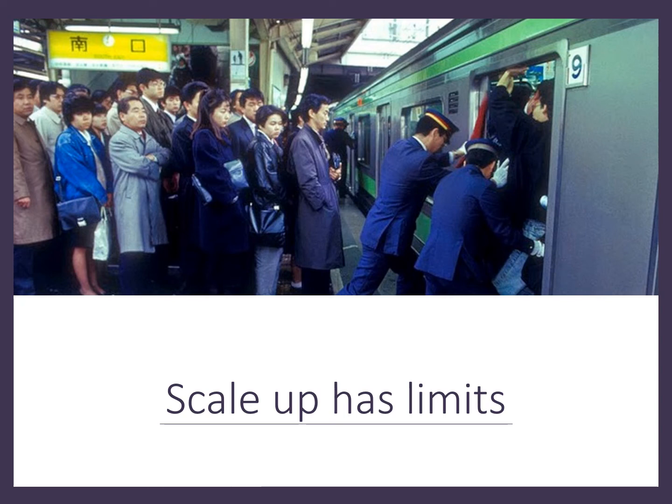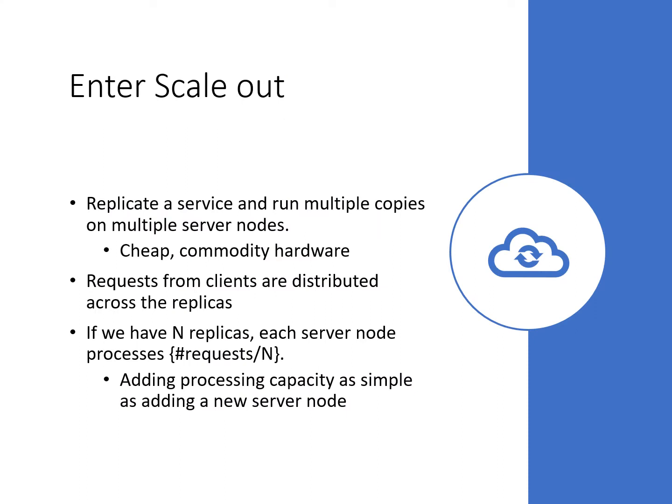It's inevitable that for many applications, the load will grow to a level which will swamp a single server node, no matter how many CPUs and how much memory you have. That's when you need a new strategy — namely, scaling out or horizontal scaling. Scaling out relies on the ability to replicate a service and run multiple copies on multiple server nodes. Requests from clients are distributed across the replicas so that, in theory, if we have n replicas, each server node processes 1/n of the requests — basically the requests are shared evenly. This simple strategy increases an application's capacity and hence scalability.